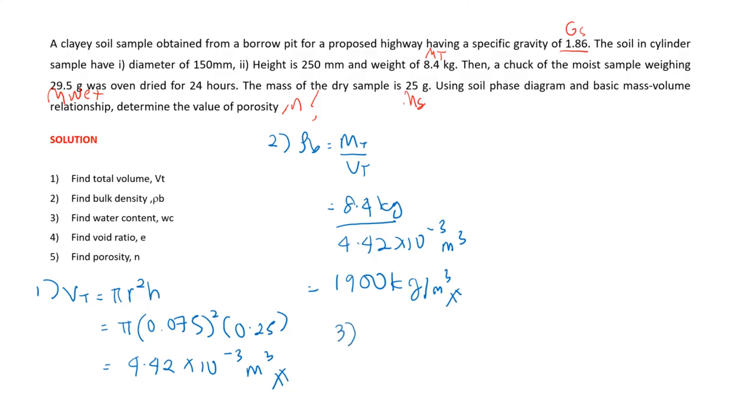Next, find the moisture content or water content, which equals mass of water divided by mass of solid. Remember, 29.5 grams is the total mass, so you subtract the mass of solid, which is 25 grams, to get the mass of water, then divide by the mass of solid. You get 0.18 or 18 percent, so the moisture content is 18 percent.